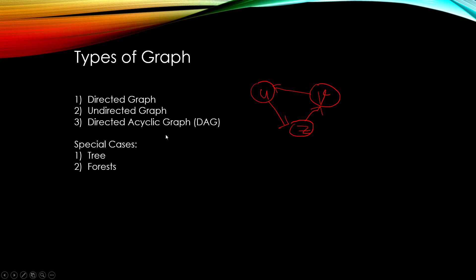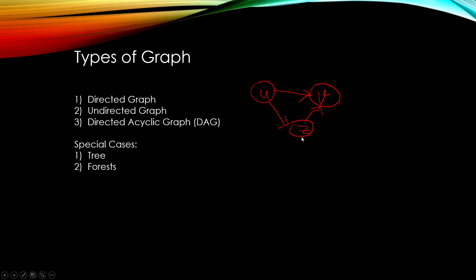A directed acyclic graph, or DAG, is a directed graph with no cycles. By definition, you cannot return to the initial node from where you started. For example, you can go from u to v, or u to z to v, but you cannot come back to u, v, or z. The graph is directed and does not form any cycle at any point.